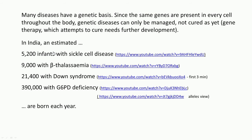Let us start with some data. In India, an estimated 5,200 infants with sickle cell disease, 9,000 with beta thalassemia, 21,400 with Down syndrome, and 390,000 with G6PD deficiency are born each year. You can look at an optional video on sickle cell disease, which is linked in the PDF file.